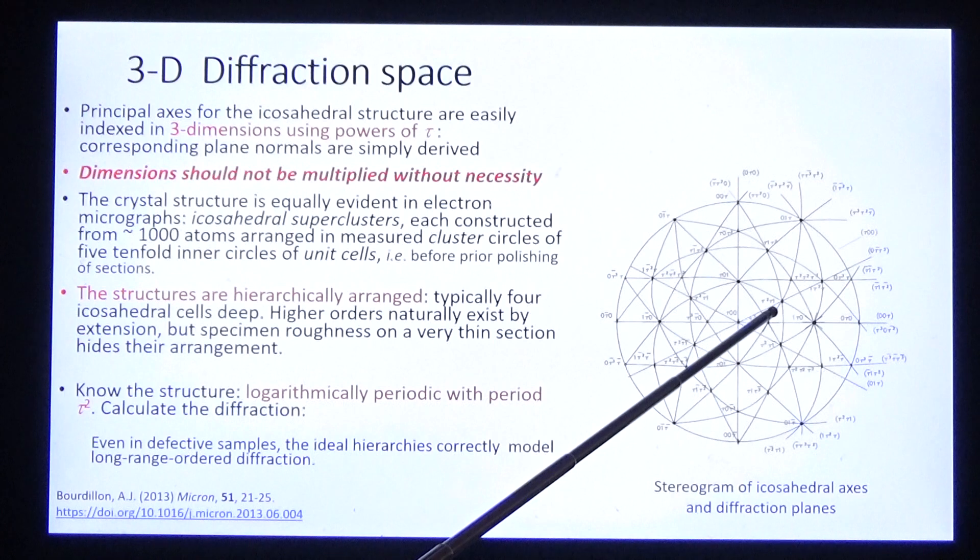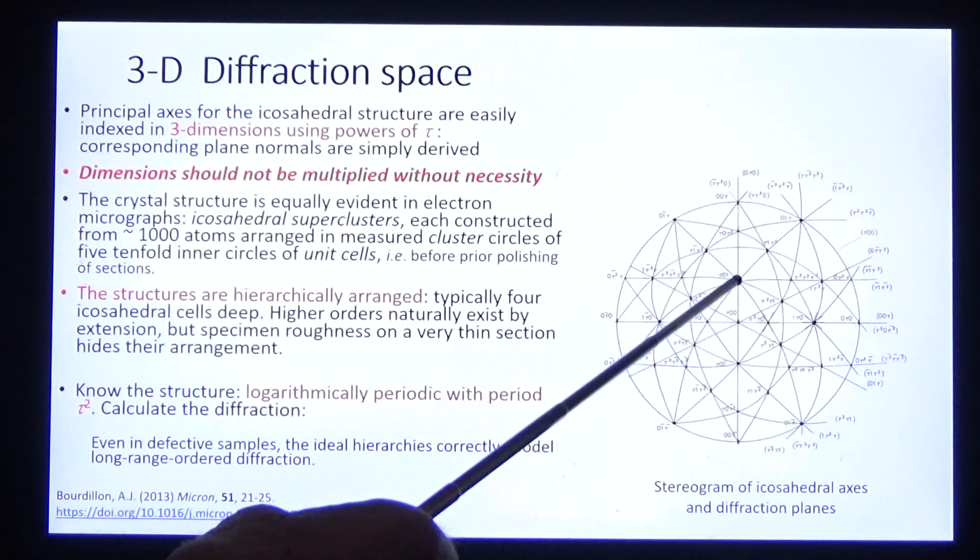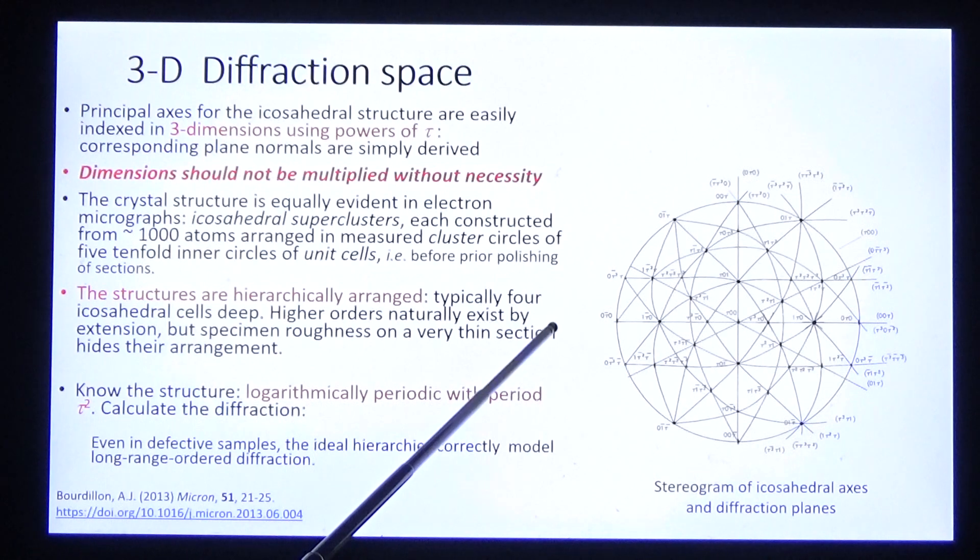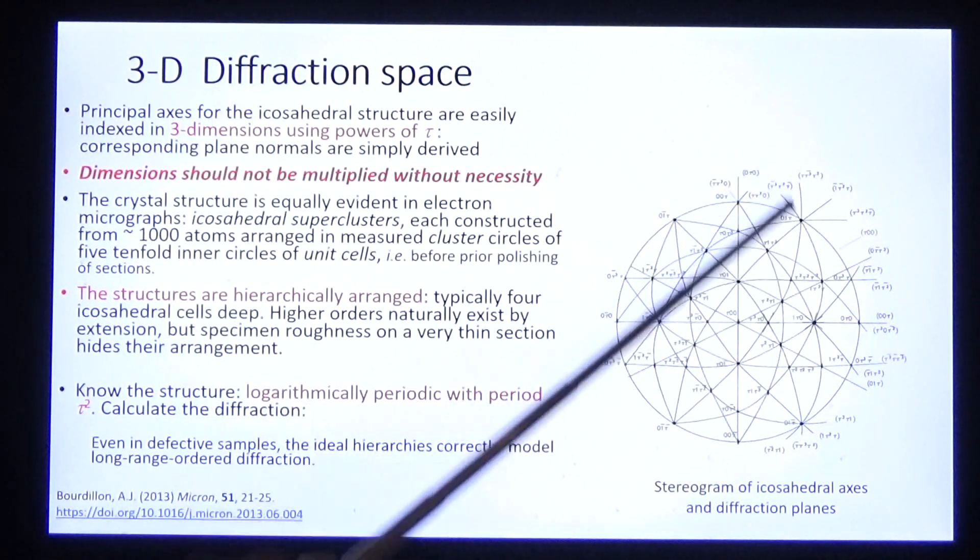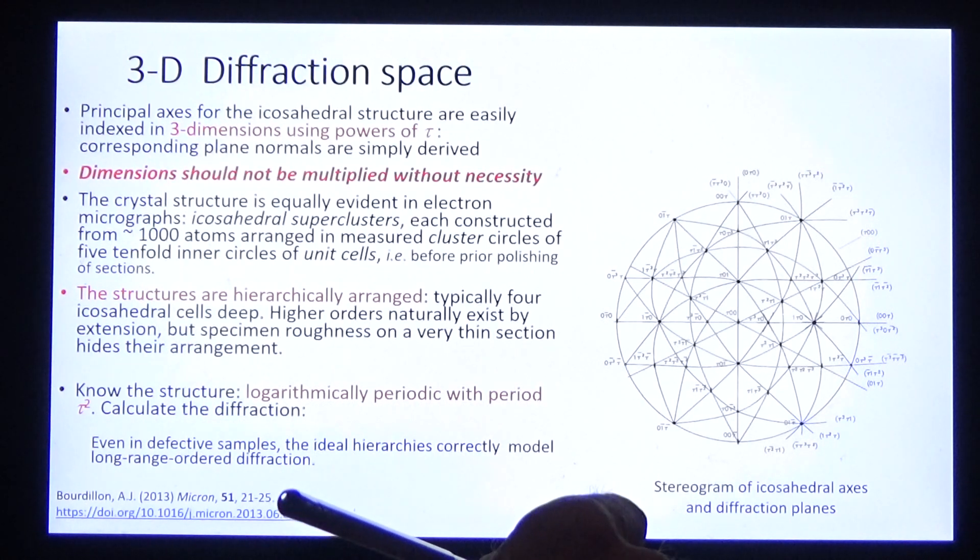Before we discuss diffraction, we must get the indexation correct. This stereogram shows the principal axes and principal diffraction planes in the icosahedral structure. They're mutually normal. And they are all three-dimensional, geometric, simple, and complete. Dimensions should not be multiplied without necessity. Mathematicians are dreamers.